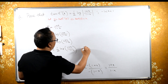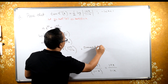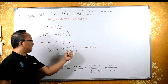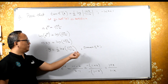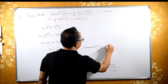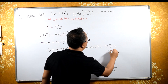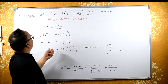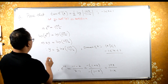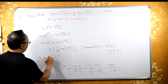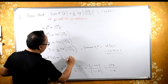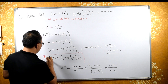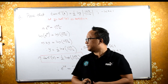Now, what is the domain of x? We need the argument of the log to be positive. Therefore the values of x should lie between minus 1 and plus 1, i.e., |x| is less than 1. Hence our result is proved: tanh⁻¹(x) equals half log of (1 plus x) upon (1 minus x). This is the required proof.